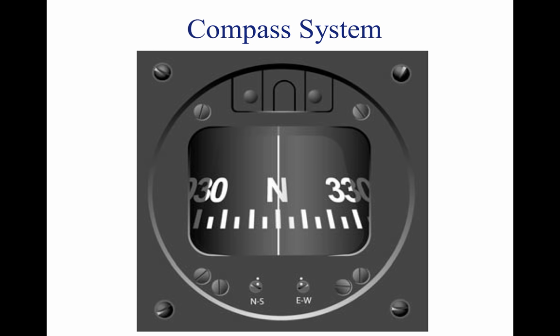The card is marked with letters representing the cardinal directions — north, east, south, and west — and a number for each 30 degrees between these letters. The final zero is omitted from these directions; for example, 3 equals 30 degrees, 6 equals 60 degrees, and 33 equals 330 degrees. There are long and short graduation marks between the letters and numbers, each long mark representing 10 degrees and each short mark representing 5 degrees.